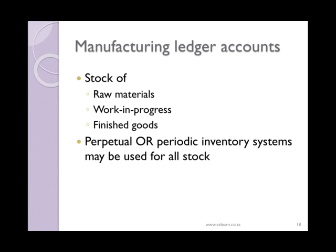We are going to focus on the periodic inventory system where we record our items as expenses. However, if you are using the perpetual system, remember that your stock will be shown as an asset when it is bought and then it will move as it is sold or used.